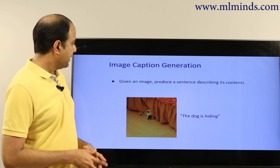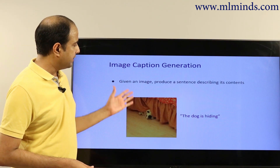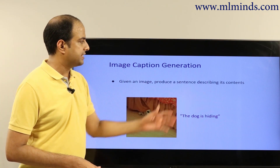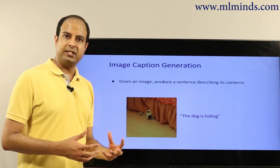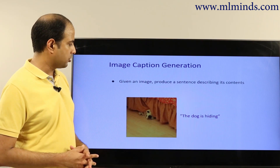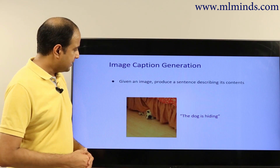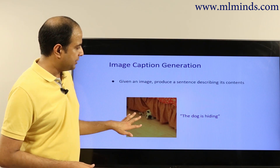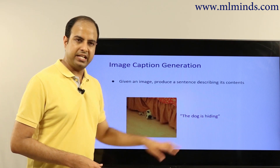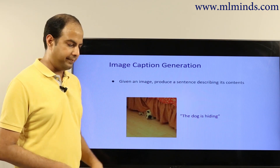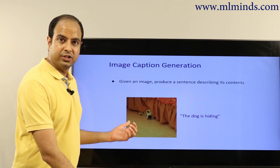Recently, people have started using machine learning in novel ways, for example given an image, producing a sentence to describe its contents — also called image captioning. For example, you want the model to be able to say 'the dog is hiding.' People have been using machine learning to do tasks of that kind as well.